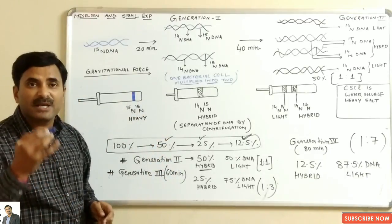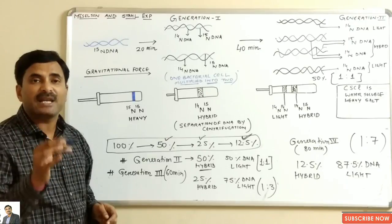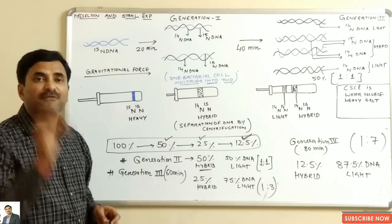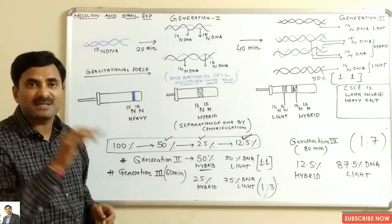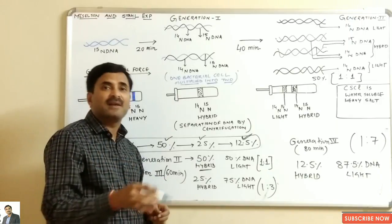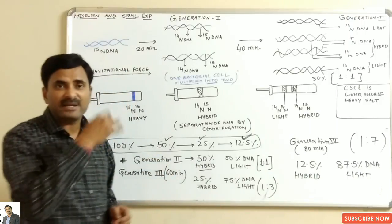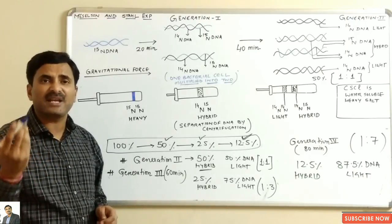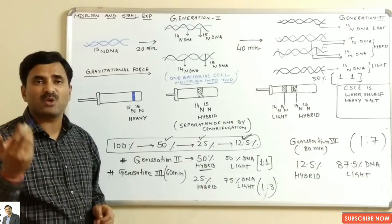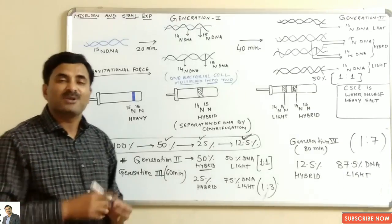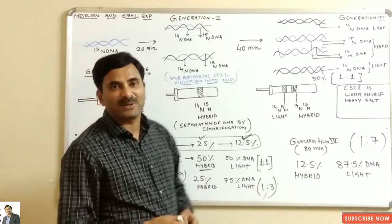By this experiment, the Meselson and Stahl experiment, we can prove that DNA replication is semi-conservative — meaning in each generation 50% of the DNA from the previous generation is conserved. Other scientists such as Taylor and colleagues also did experiments on Vicia faba to prove that DNA replication is semi-conservative.